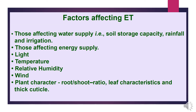Now, factors affecting evapotranspiration. First are those factors affecting water supply, like soil water storage capacity, rainfall, and irrigation. Second are those factors affecting energy supply. Third is light. Fourth is temperature. Fifth is relative humidity. Sixth is wind velocity. And seventh are plant characteristics like root-shoot ratio, leaf characteristics, and thick cuticle. All these factors are closely related to evapotranspiration.